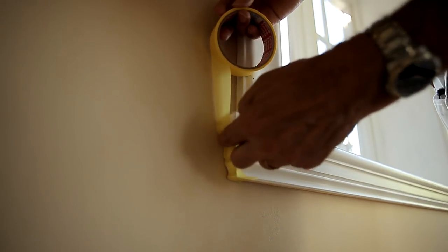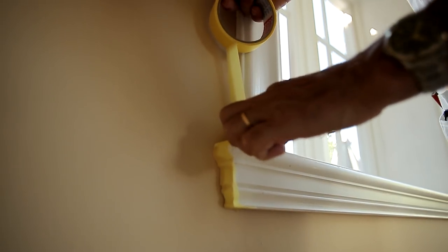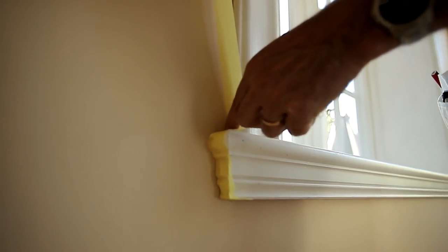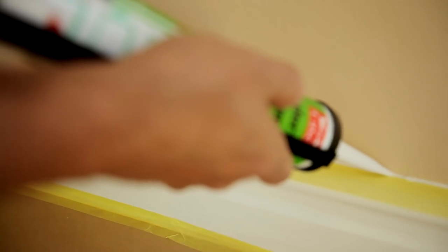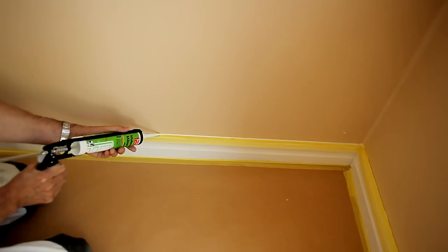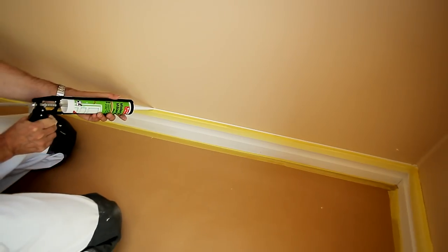Start by carefully masking all mouldings. Apply sealant in all places where there are gaps and smooth it out with a moist fingertip.